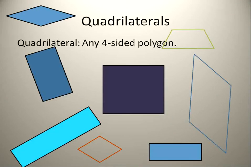First off, a quadrilateral is any four-sided polygon. So you can see some examples here of four-sided polygons. And these are mainly the ones that we're going to be talking about, the ones that you see on the board here.